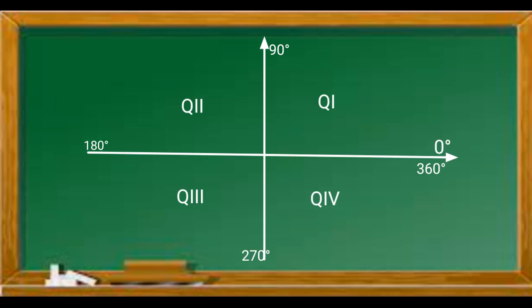There are four quadrants. 0 to 90 degrees is the first quadrant, 90 to 180 degrees is the second quadrant, 180 to 270 is the third quadrant, and 270 to 360 is the fourth quadrant.